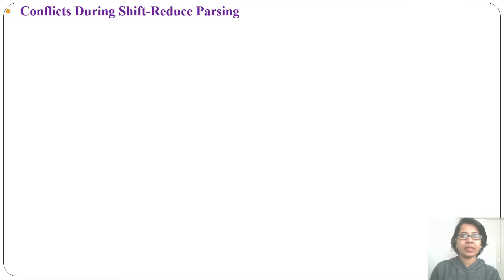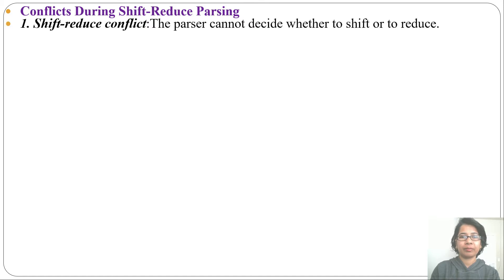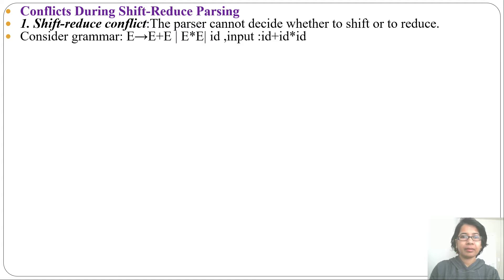What is a shift-reduce conflict? If the parser is confused whether to shift or to reduce, then that is a shift-reduce conflict. If the parser cannot decide whether to shift or to reduce, let's see one example.